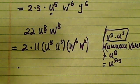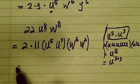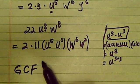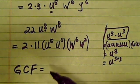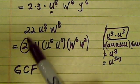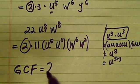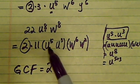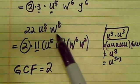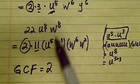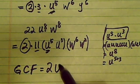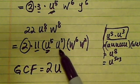So the greatest common factor is then equal to—I'm going to pick everything that's common in between the two. I have a 2 here, so 2 is common. Then 11 is not common, 3 is not common. u^5, that's common.